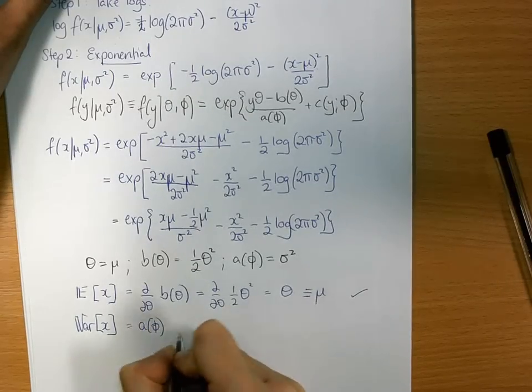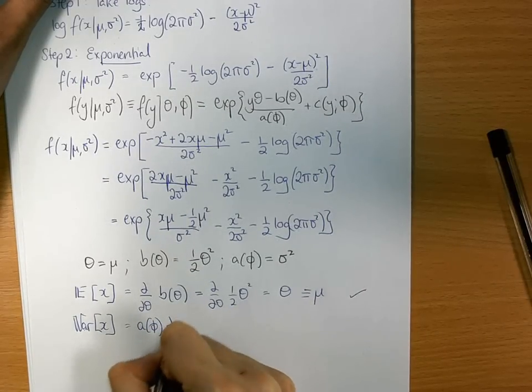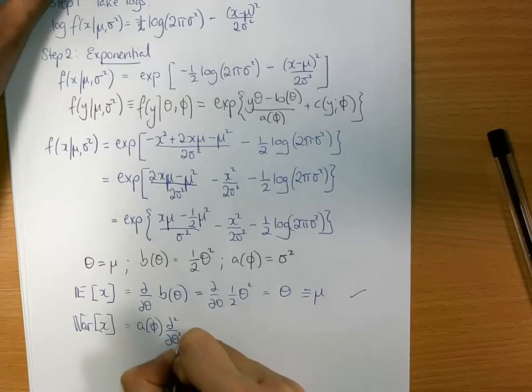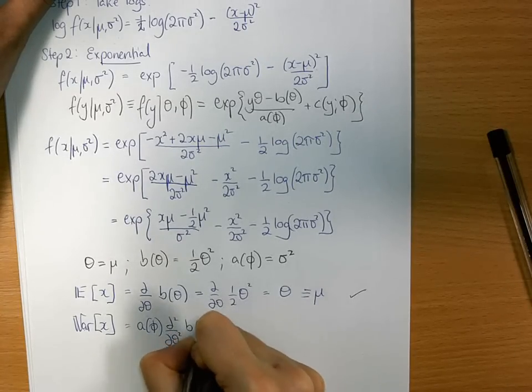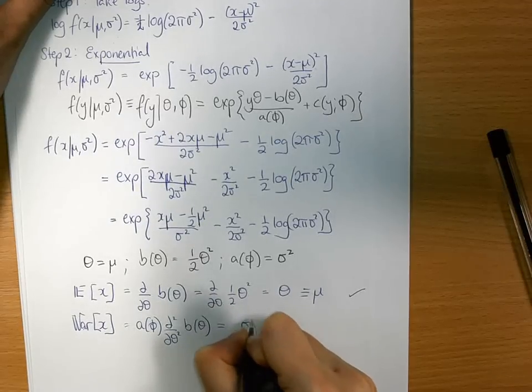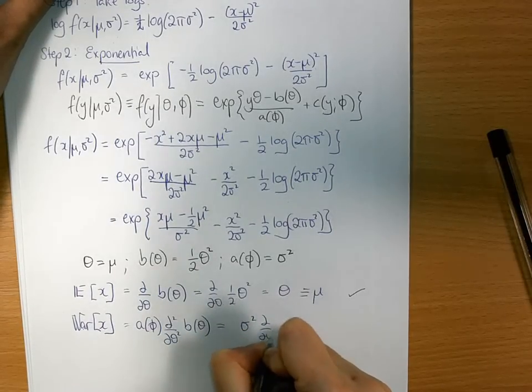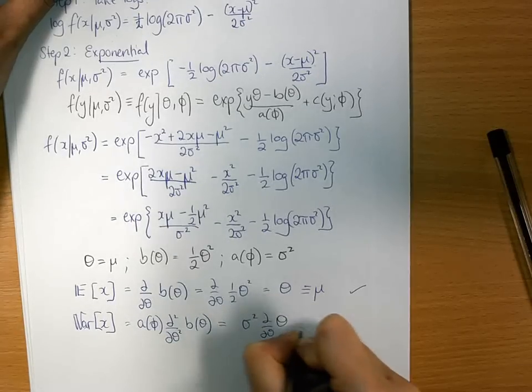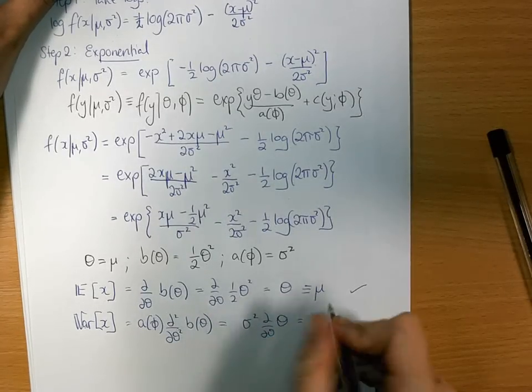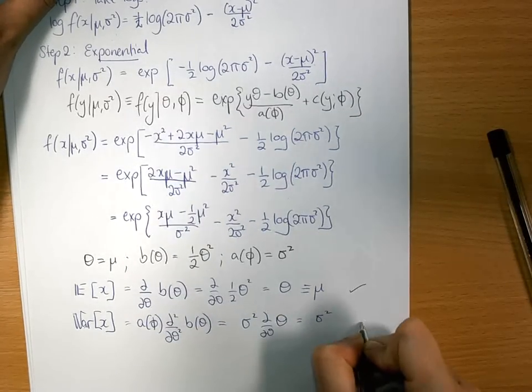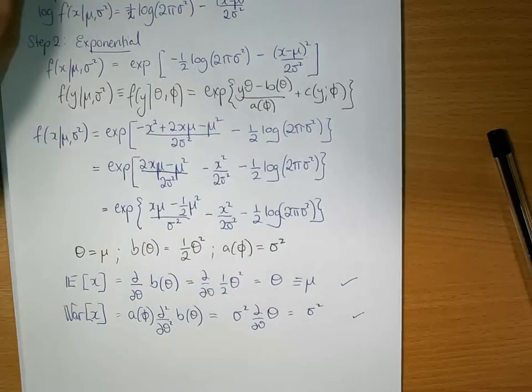The variance of x is a of phi times the second differential with respect to theta of b of theta, which is sigma squared times d d theta of theta, which is sigma squared. And that's correct.